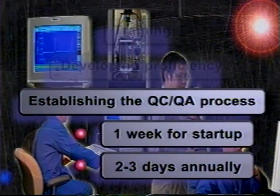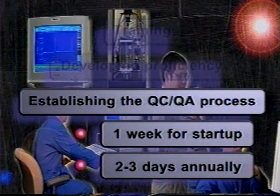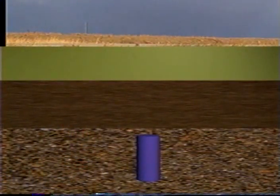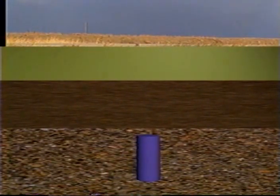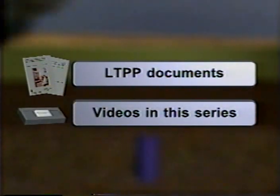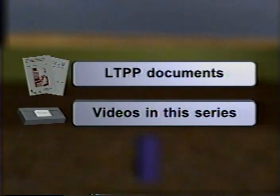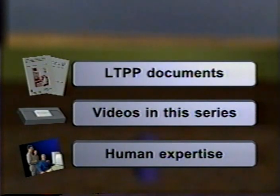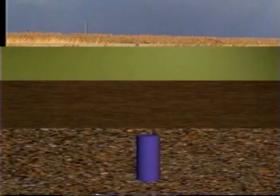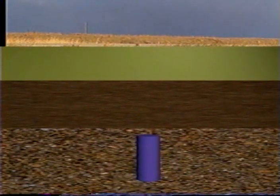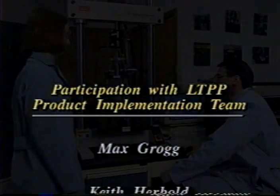Naturally, all of these additional costs will vary from lab to lab. Through the LTPP program, considerable resources have been brought together to help administrators, engineers, and technicians get into resilient modulus testing. The startup and test procedure documents define requirements and processes. This and the other videos in the series help agencies by introducing lab staff to the testing apparatus and procedures. And the cadre of experienced lab personnel is ready to help solve problems. With these resources, administrators and engineers can now be confident that their labs will achieve excellent results in resilient modulus testing.